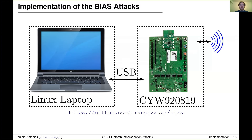We implemented the BIAS attacks using off-the-shelf hardware and open source software. Our attack device consists of a Linux laptop connected with a Cypress Bluetooth development board. Our implementation enables transforming our attack device into any Bluetooth device by changing characteristics such as Bluetooth address, Bluetooth name, and Bluetooth capabilities. Furthermore, the implementation enables conducting all the BIAS attacks presented so far on actual devices. Our implementation requires significant engineering effort as it involves patches to the Linux operating system kernel and to the development board Bluetooth firmware. We open sourced our implementation and the code is on GitHub.